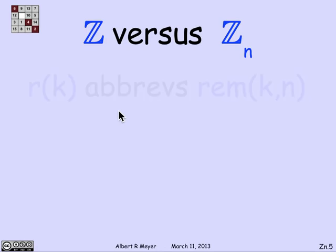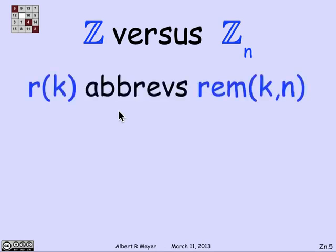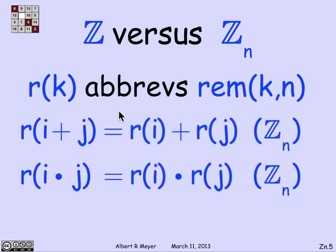What's the connection between the set of all the integers and the integers mod n? We can state this abstractly in the following way. For convenience, abbreviate the remainder of k on division by n as r(k). So n is fixed. If you take the remainder of i plus j, that's literally equal to taking the sum of the remainders in Z_n.